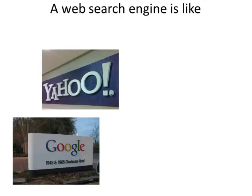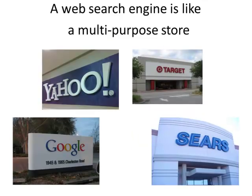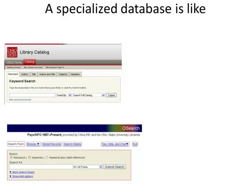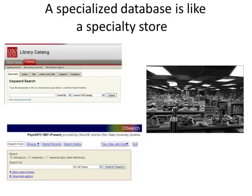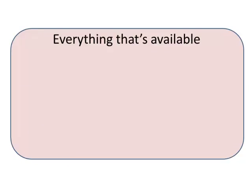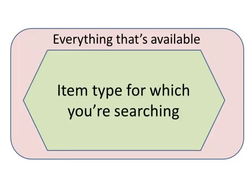A web search engine is like a multipurpose store. Think about everything that's available versus the item type for which you're searching. A specialized database is like a specialty store. Think about everything that's available versus the item type for which you're searching.